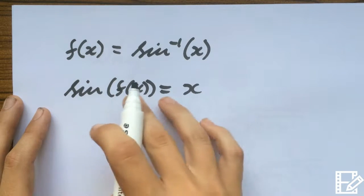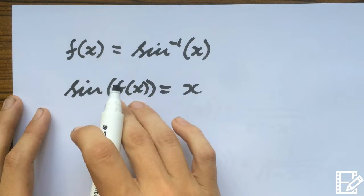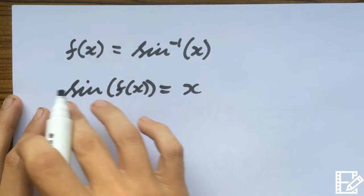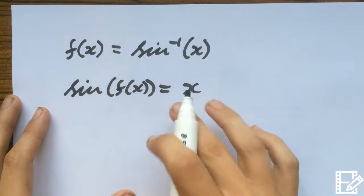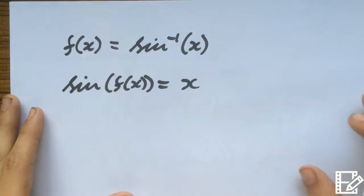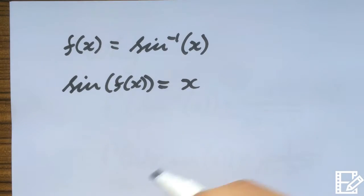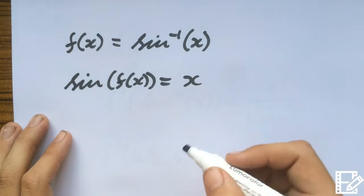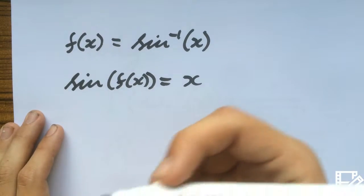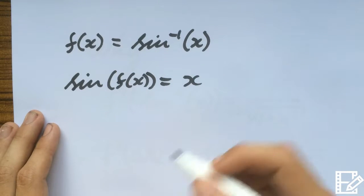Because this is what you do: sine of f(x) equals x. If you wanted to find what f(x) was, you'd put the inverse of sine on the other side, because that's how you get sine from one side to the other. That's how it works. So I'm just reversing that process. So we have this.